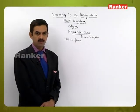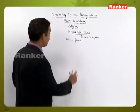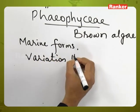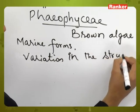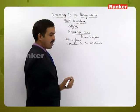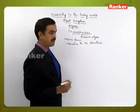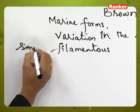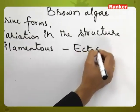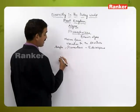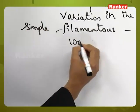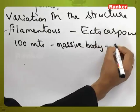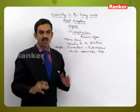Very few are freshwater in nature. There is a lot of diversity and variation in structure, ranging from small to large body organization. Some are simple filamentous like Ectocarpus, while others have complex structures that may grow up to 100 meters in height, forming massive bodies as seen in kelps.